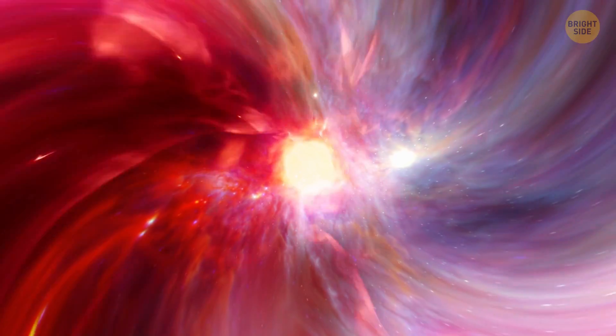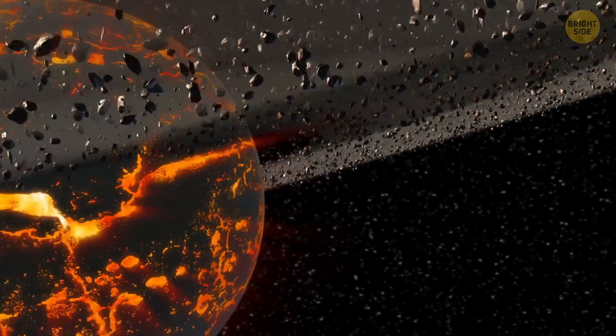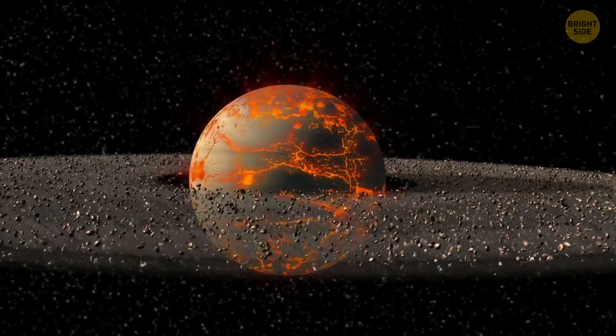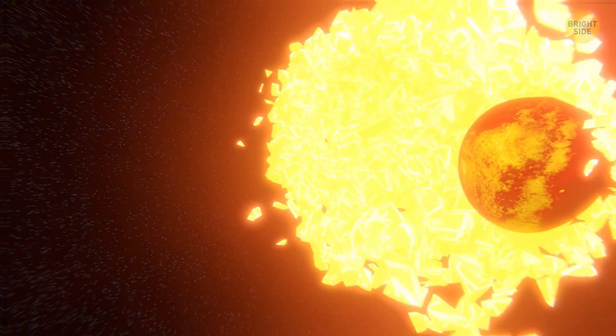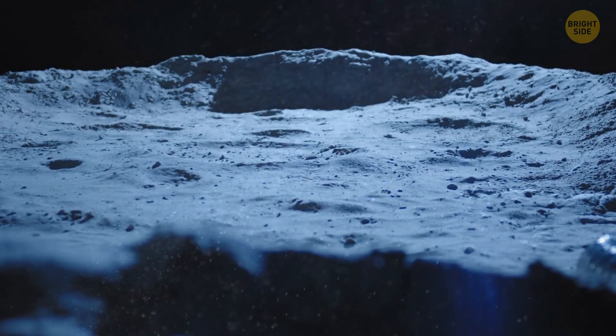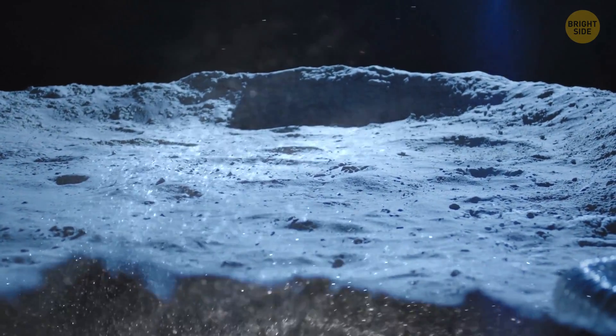The early solar system was a chaotic place. A number of stellar bodies were created that didn't make it into a full planet. One of these bodies, as large as Mars, smashed into Earth, throwing huge chunks of our planet's crust into space. Gravity took over and tied these separate elements together. This explains why the moon is made of lighter particles than we find here on Earth.